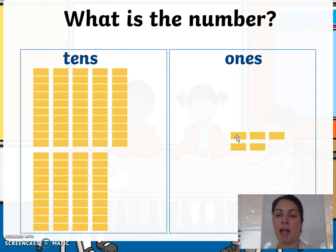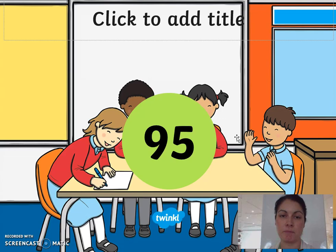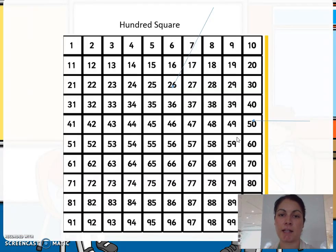Next we have been using a hundred square a lot in class. We have been explaining to the children that if you start at one, each row goes across to ten, and then you can go down in tens all the way to a hundred.